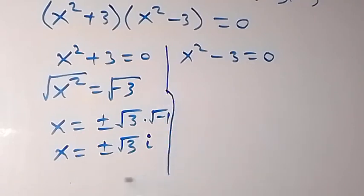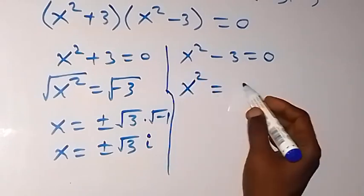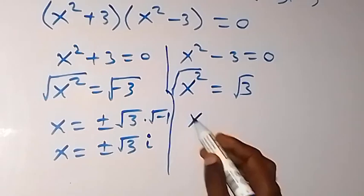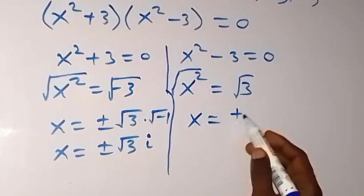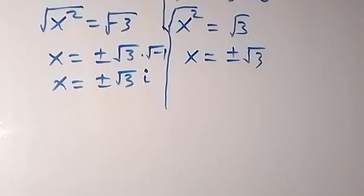Then on this side also we have x squared equals 3, and square root of both sides here. Square cancels square root, x equals plus or minus root 3. And here we have two solutions.